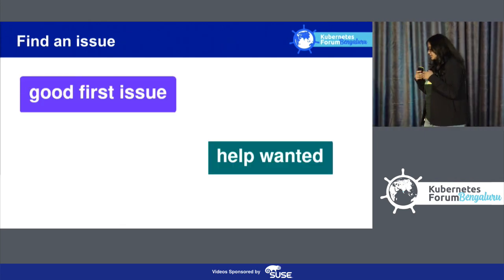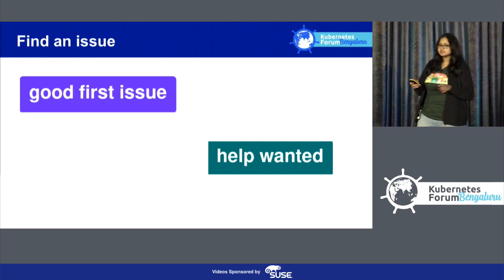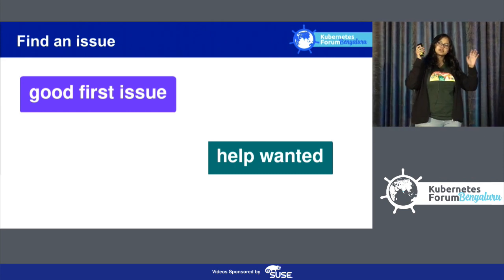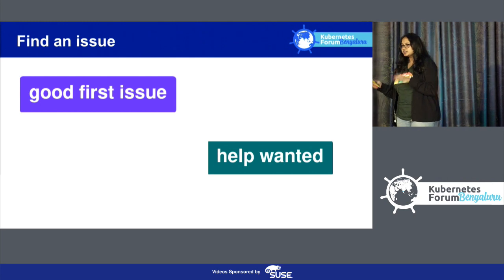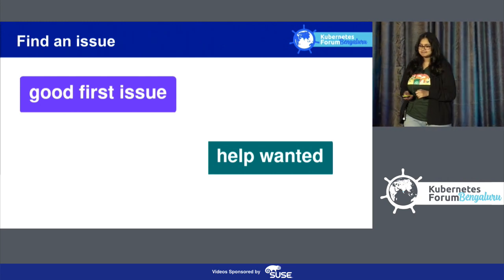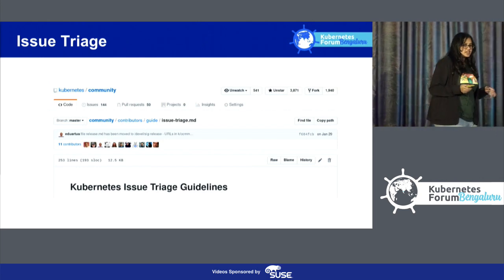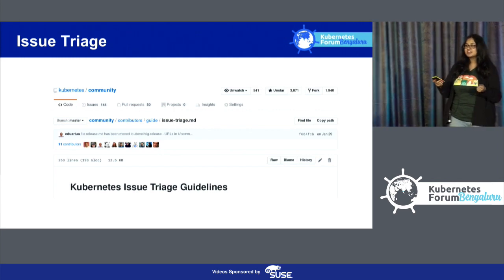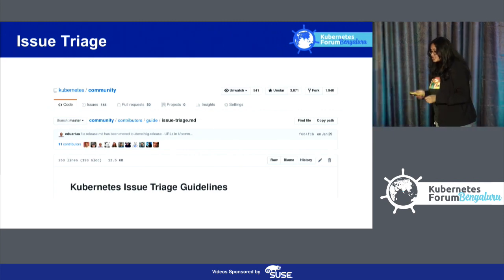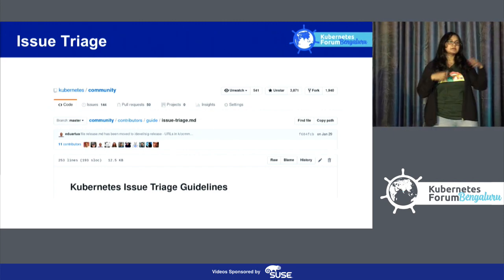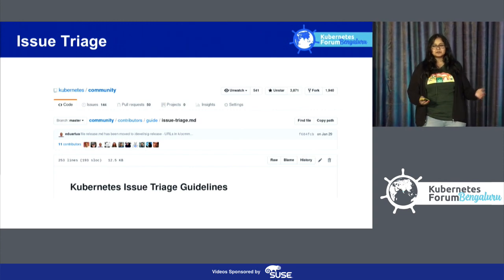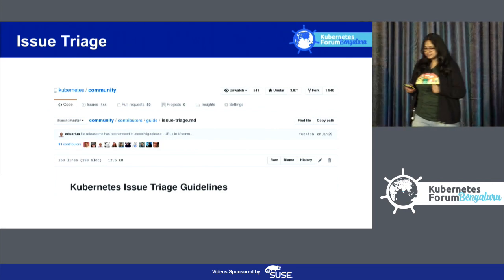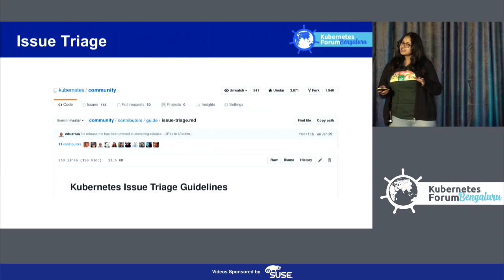To find an issue to work on in the Kubernetes project, we have two labels: good first issue and help wanted. Good first issues are for first timers and absolute beginners in the project. Help wanted issues are for folks who've already solved at least one or two good first issues. You can also do issue triage — we have around 2,000 issues at this point on the Kubernetes project and we need a lot of help. Issue triage means making sure issues have the right labels, people are paying attention to them, they don't get auto-closed by a bot, and priorities are set. This won't take too much time, so please check it out.